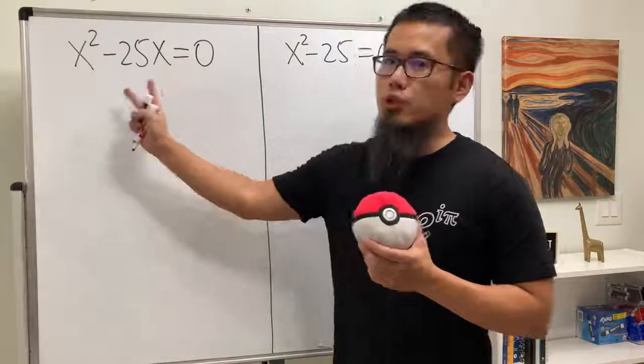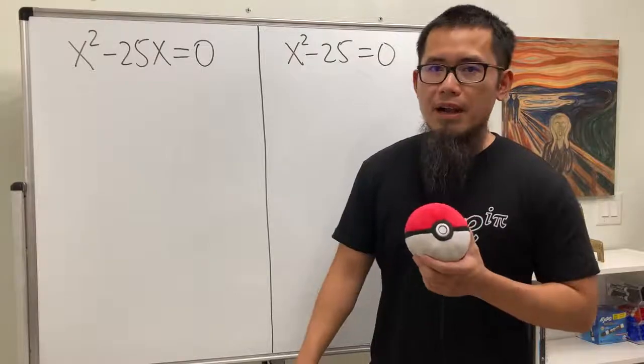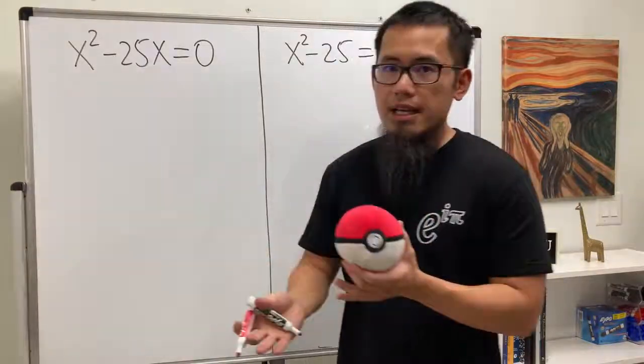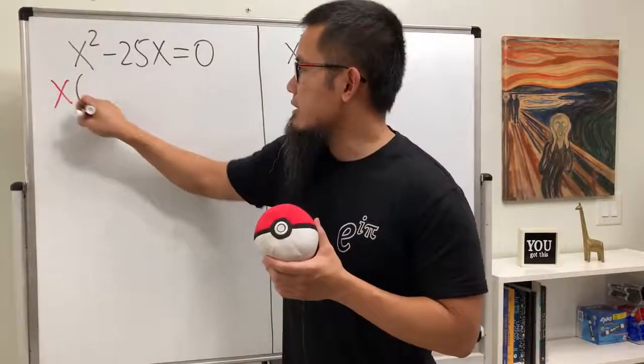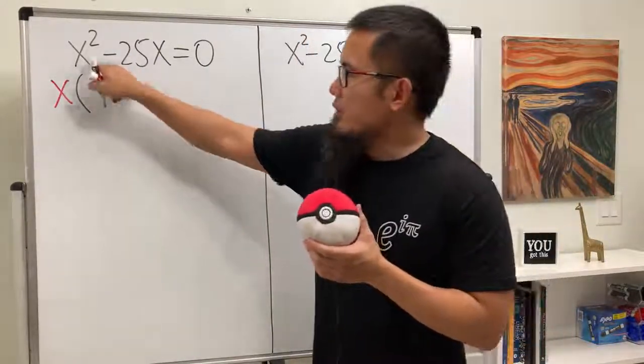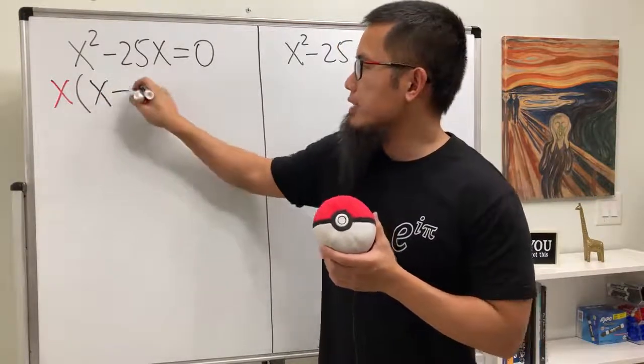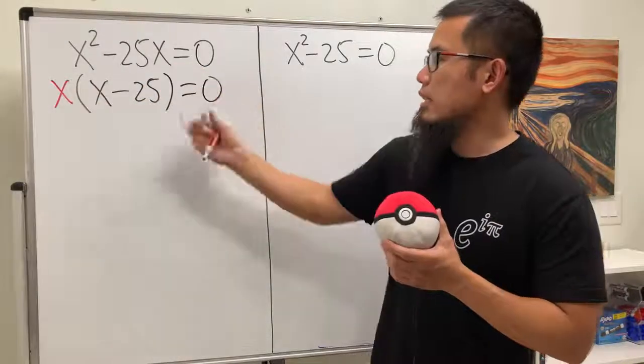We see that we have two terms on the left-hand side, and the right-hand side is equal to 0 already. So we can just solve this by factoring. And the way to factor this is because they have x in common, so we can just factor that out. So we can get x times, originally you have x squared, we factor one of them out already, so just have x left. And then minus 25, this x is out already, so that's what we have.